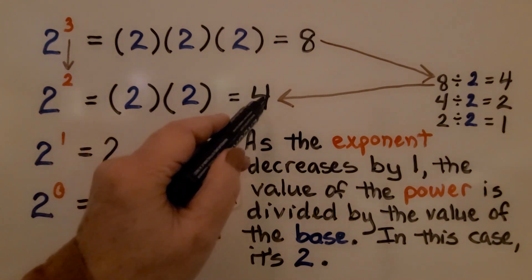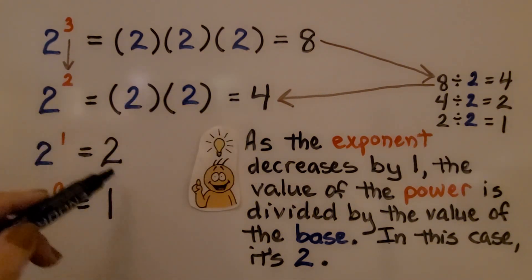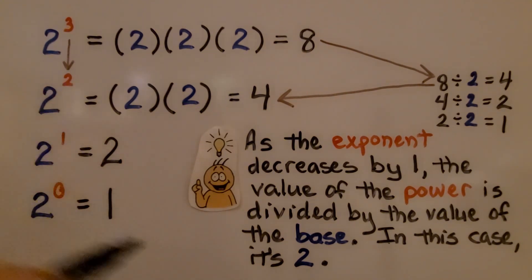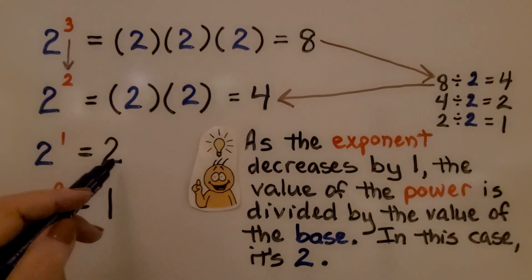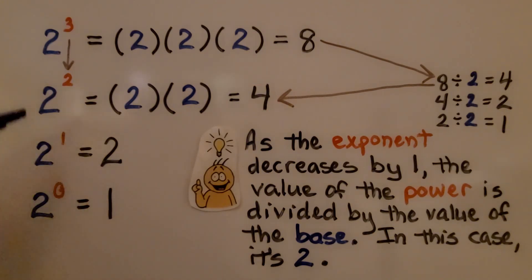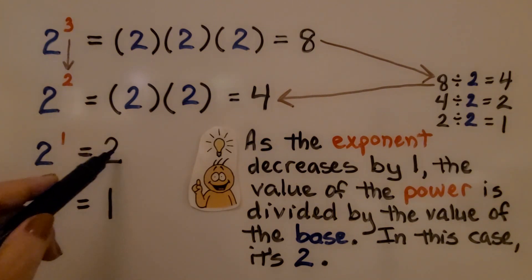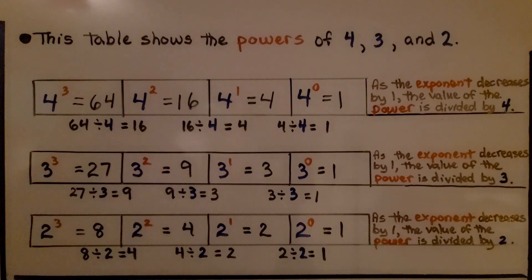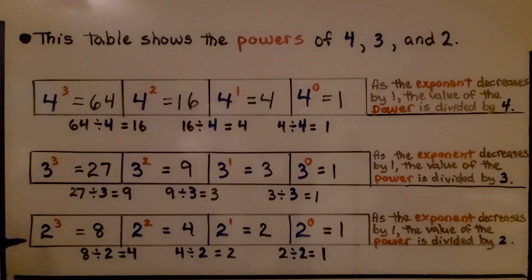And if we do 4 divided by the base 2, we're going to get a 2 — and it decreased by 1 more. So this 4 got divided by the base 2. And if we decrease 1 more down to a 0, this 2 will get divided by the base 2, and we get a 1. Now take a look at the table we have here. This shows the powers of 4, 3, and 2.